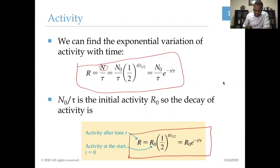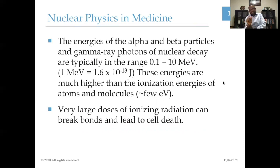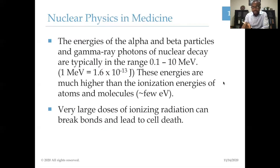Before we start discussing the main topic of today, we note that the energies of alpha particles, beta particles, and gamma rays are typically in the range of 0.1 to 10 MeV. These energies are much, much higher than the ionization energy of atoms and molecules. Our bodies are made up of atoms and molecules, and to ionize — to knock off an electron from a neutral atom — you need just a few electron volts. So if I shine a source of radiation with energy in the MeV range on a molecule, I'll be able to ionize it.